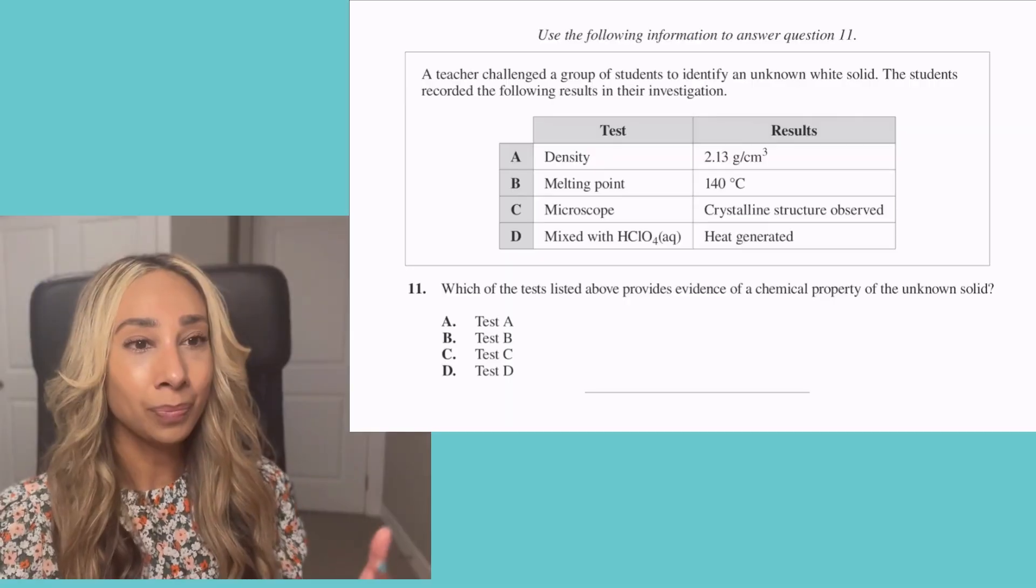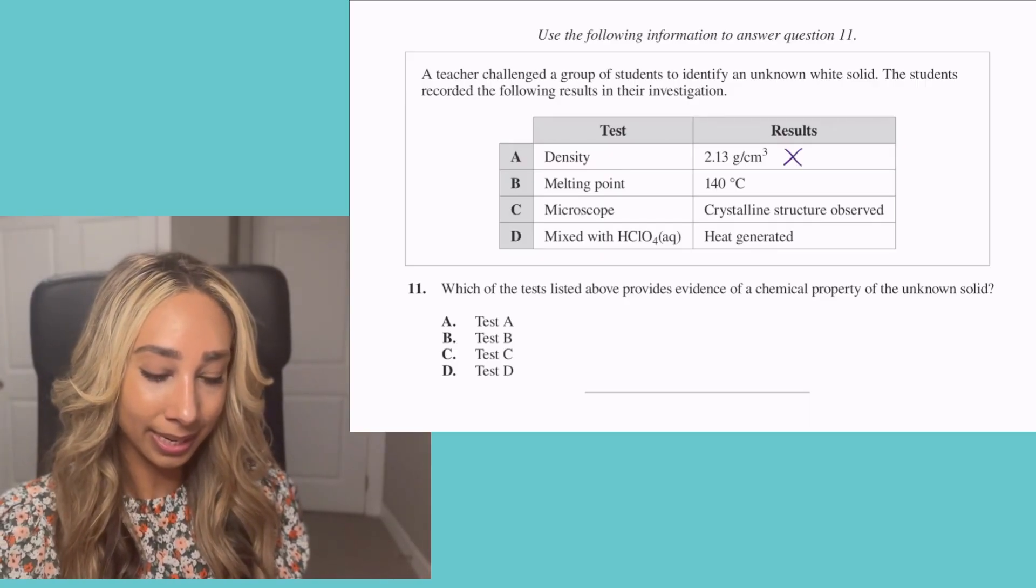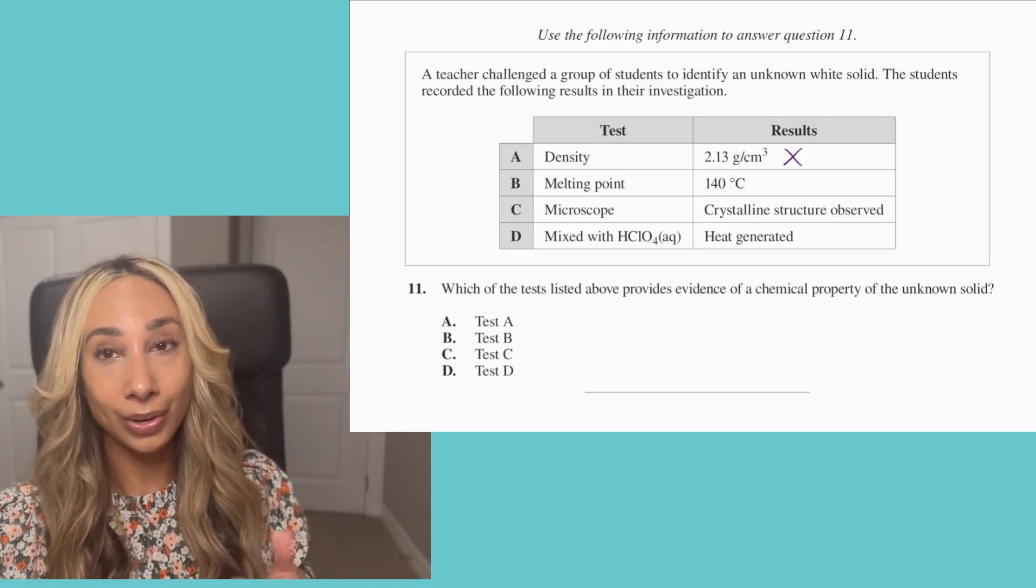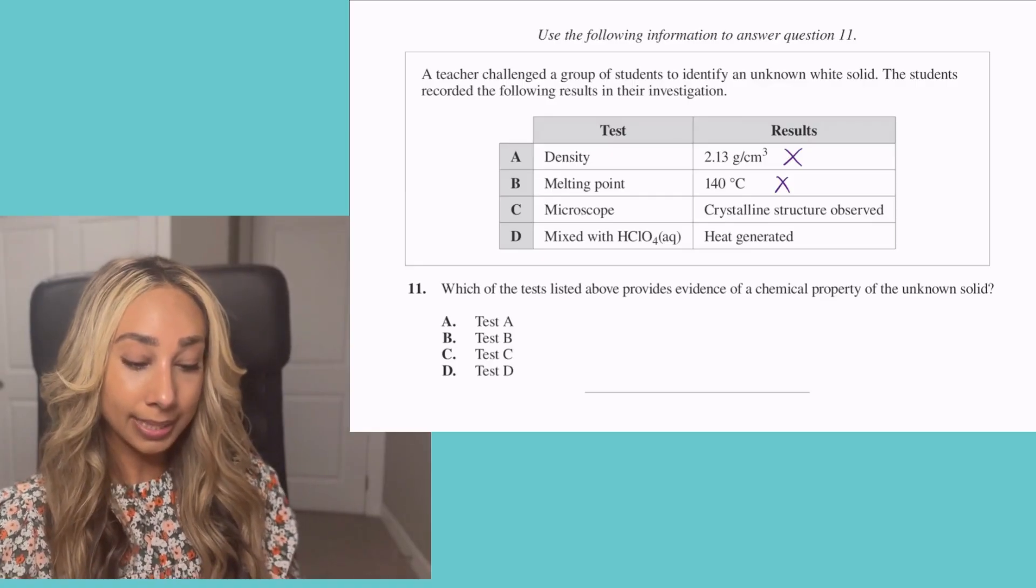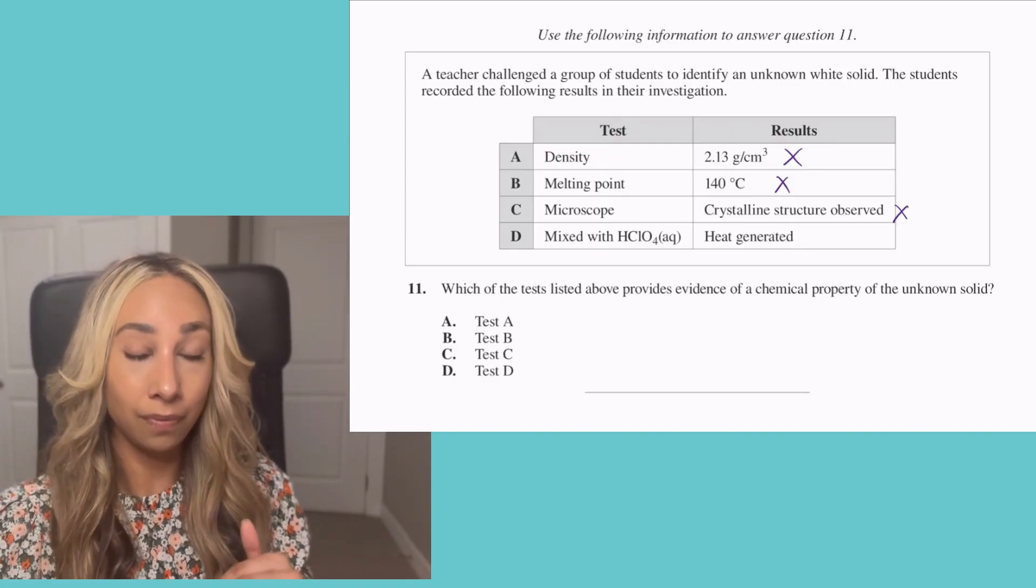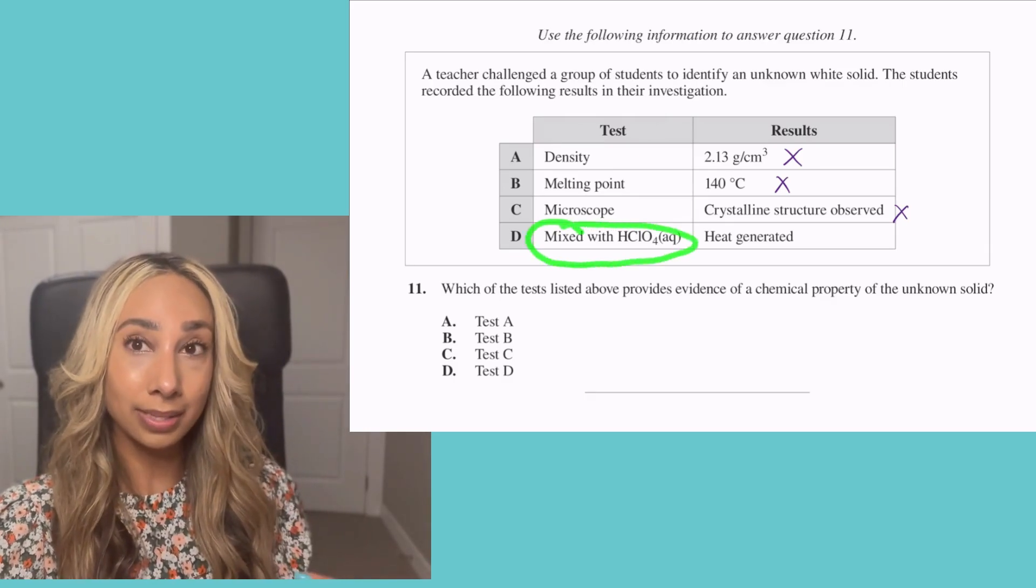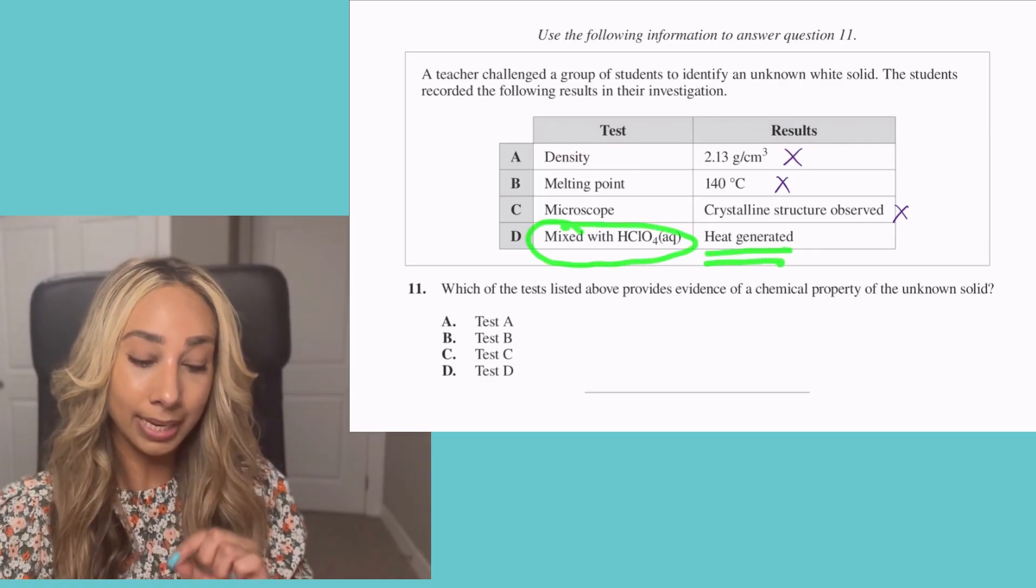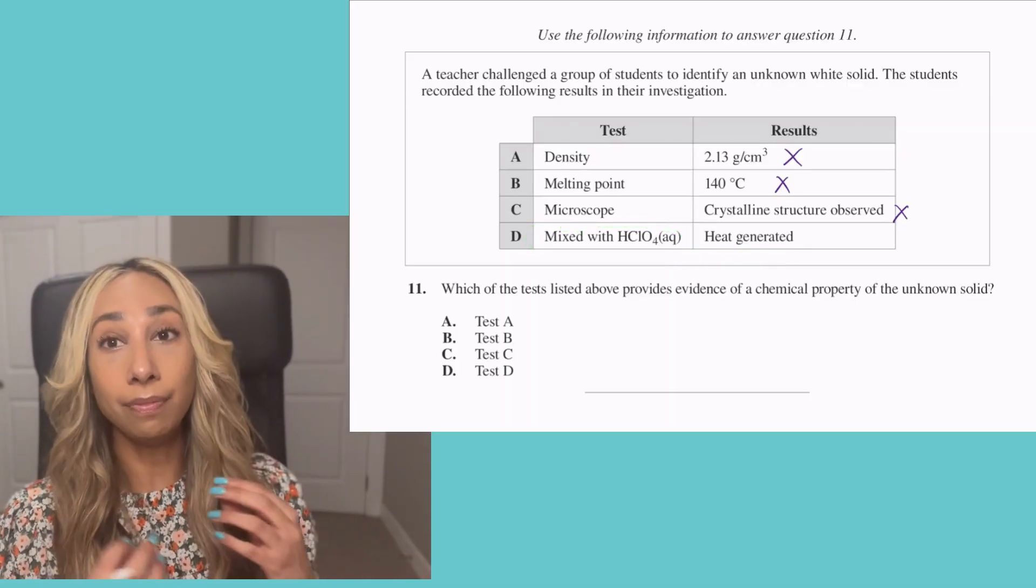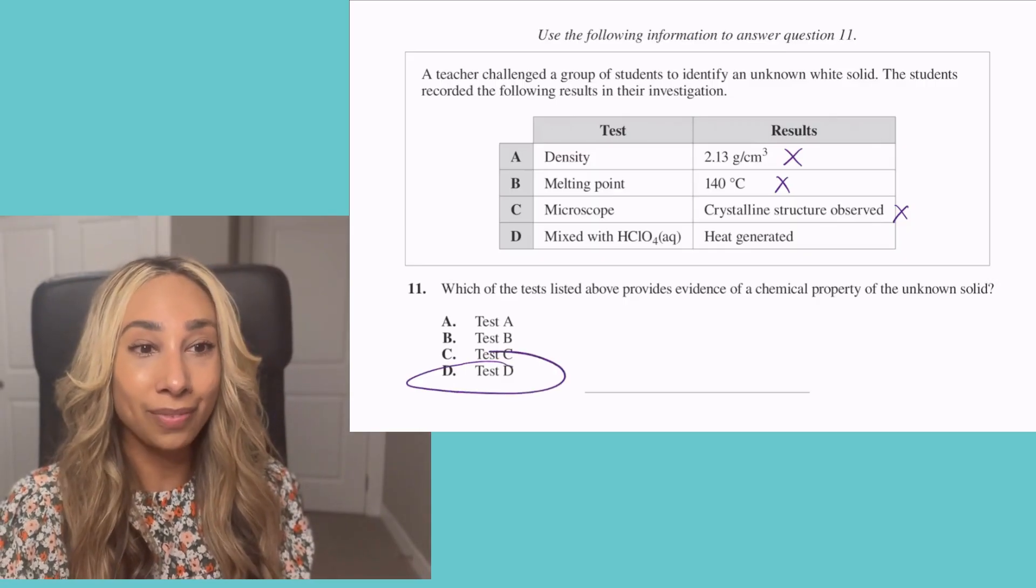When we're thinking of a chemical property, we're thinking how does it chemically react. When I mix it with something, what does it do? Let's take a look at our options. Density, you're just looking at the density of the element. Melting point, that's a physical property. Crystalline structure observed, that's what it looks like on its own, not reacting with anything. That leaves us with the last one. We're mixing the compound with an acid and heat is generated. That is evidence of a chemical change. Test D is definitely measuring for a chemical property.